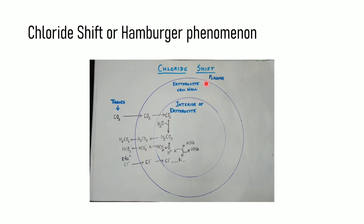The chloride shift mechanism, or hamburger phenomenon — named after its discoverer — is a mechanism by which CO2 is buffered to form sodium bicarbonate. The carbon dioxide released from the tissues after metabolic activity is done enters into the RBC due to increased concentration of CO2. Once it enters the RBC, it reacts with water to form carbonic acid, a reaction that occurs due to the presence of the enzyme carbonic anhydrase.